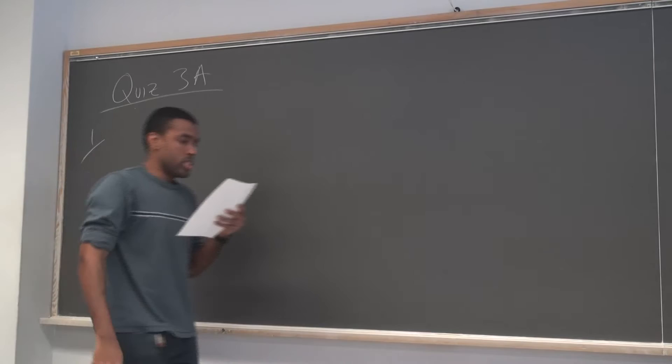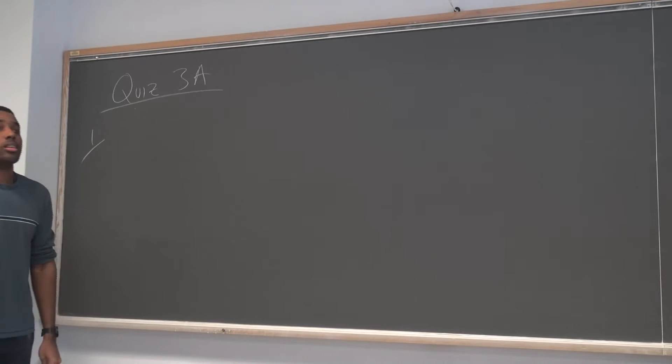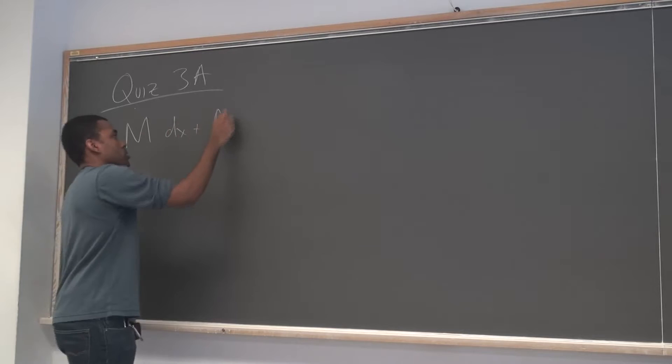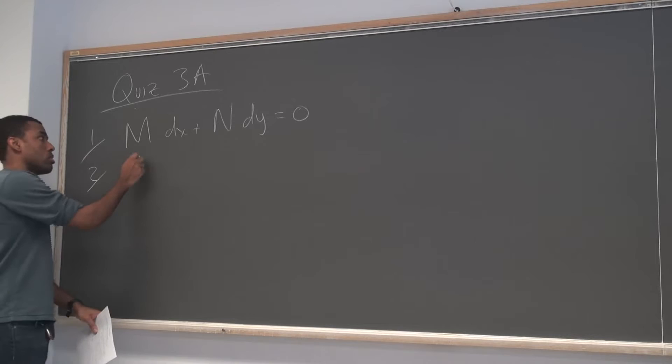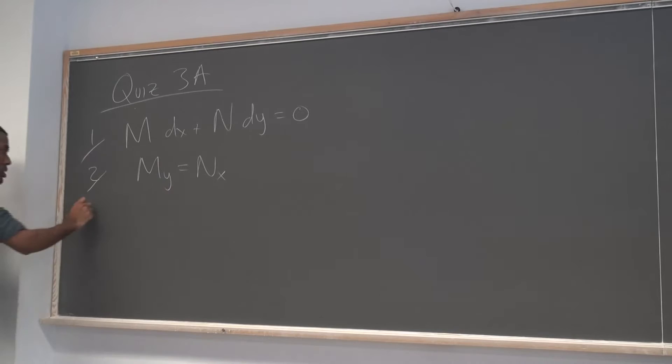Alright, let's start. What is the standard form of an exact ODE? What does an exact ODE look like? You write something like this, and you can start to spot if it's exact. Part 2 said: what equation must be satisfied in order for this form to be exact? M_y must equal N_x — and these are partial derivatives. So that was the answer to that, and that should have taken you no time at all.